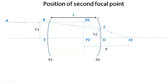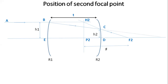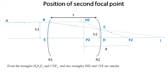Let us imagine that the second spherical surface is absent. In the presence of the first spherical surface only, the refracted light BC travels without any deviation. That is, in the absence of the second spherical surface, the light ray BC travels without any deviation and reaches the principal axis at point I. Now let us derive the expression for the second focal point position. There are two pairs of similar triangles: H2, P2, F2 and C, D, F2.